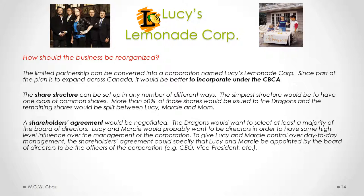After setting up the corporation and share structure, we would need a shareholders agreement negotiated between Lucy, Marcy, Mom, and the Dragons. The Dragons would want to select at least a majority of the board of directors, because they want control over the high-level management of the corporation. Lucy and Marcy would probably want to be directors as well to have some high-level influence. To give Lucy and Marcy control over day-to-day management, the shareholders agreement could specify that they be appointed as officers — for example, making Lucy the CEO and Marcy a vice president or chief operating officer.